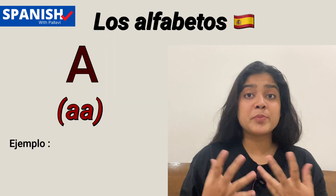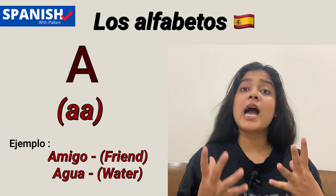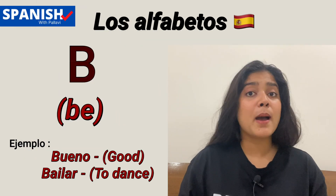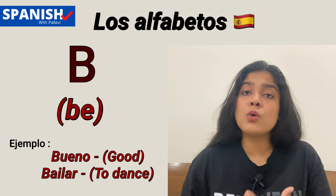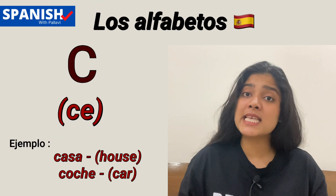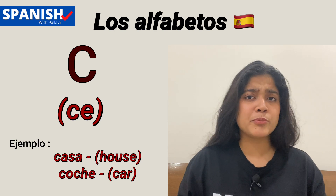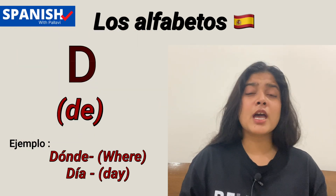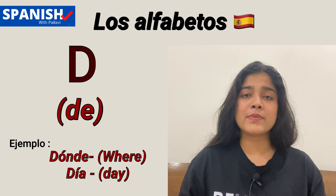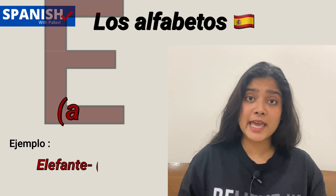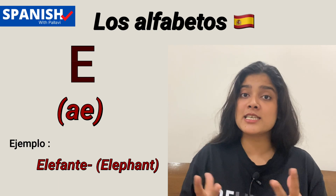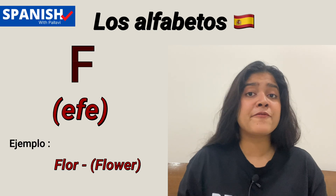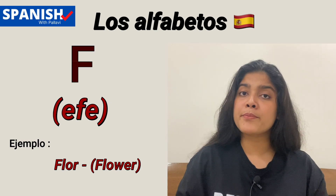This letter is A — repeat after me: A. The examples are amigo (friend) and agua (water). This is B — B, like bueno and bailar. This is C — C, example: casa (house), coche (car). This is D — D, example: donde, ver, día. This is E — the pronunciation is E, example: elefante. This is F — F, example: flor (flower).